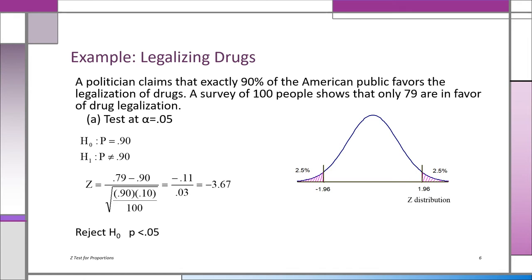The calculated value of z: the data tells us 79% of the sample was in favor — so 0.79 minus 0.9, using the hypothesized proportion 0.9 in the denominator, that's 0.9 times 0.1 divided by 100 under a square root. You get negative 0.11 in the numerator, 0.03 in the denominator, or negative 3.67 — way out in the region of rejection. We reject the null hypothesis at alpha equal 0.05. The p-value would be way less than 0.05.